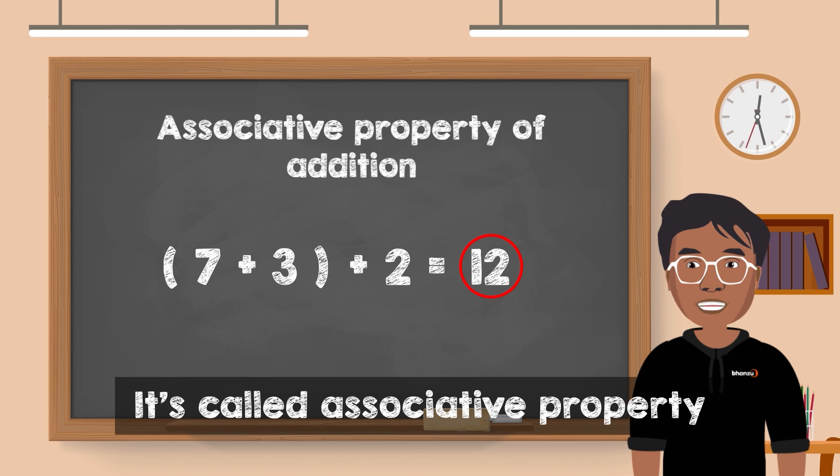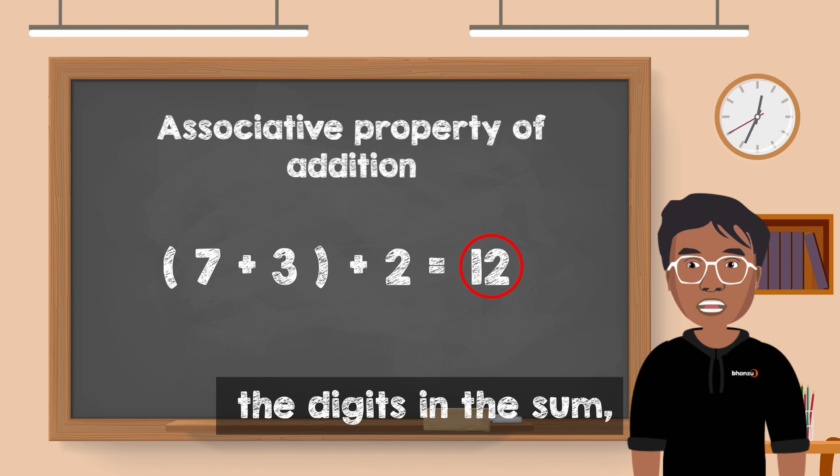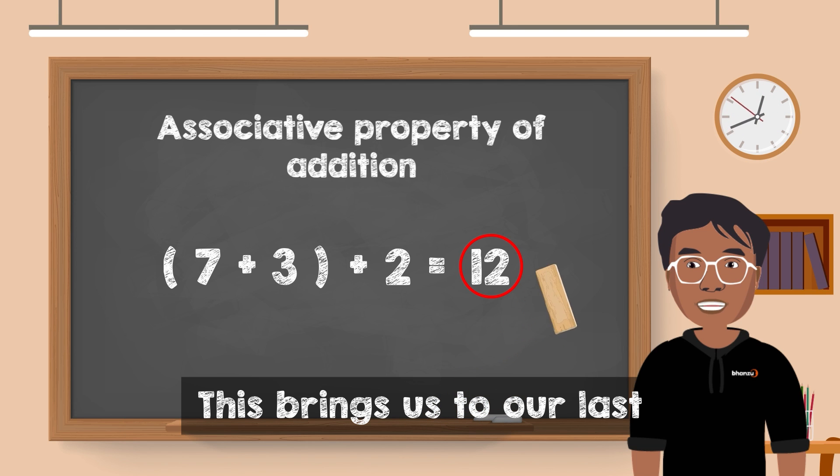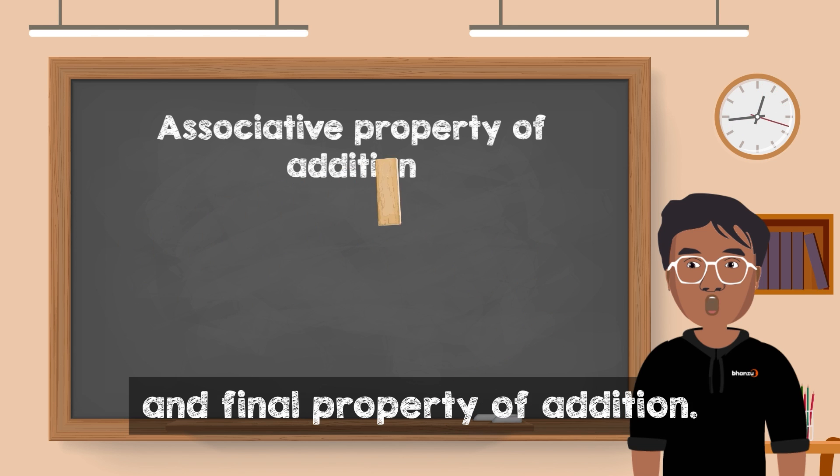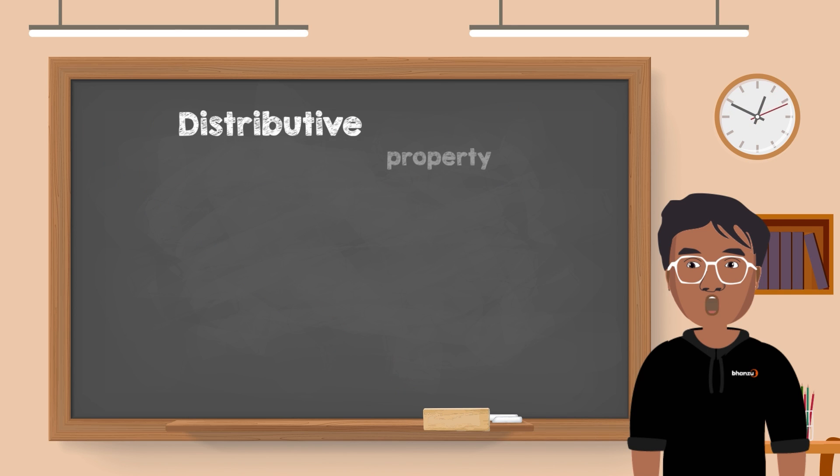It's called associative property because how we associate the digits in the sum does not change the outcome. This brings us to our last and final property of addition: Distributive property.